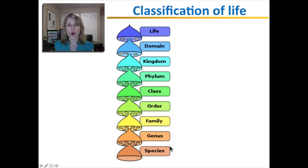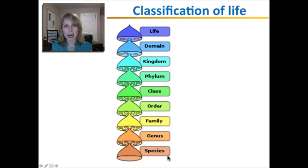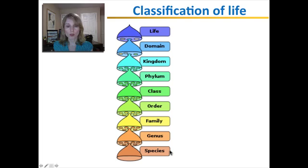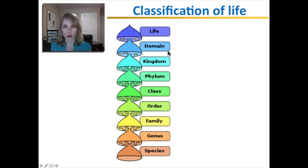The species is the most specific grouping — you will learn more about how we decide which organisms should be different species later in the year. Domain is the most general grouping.